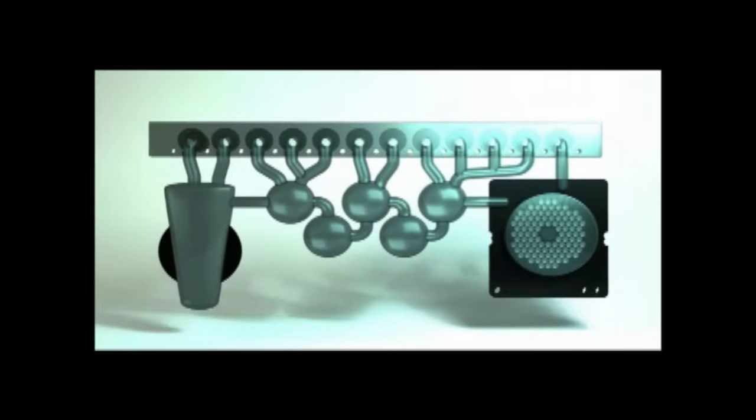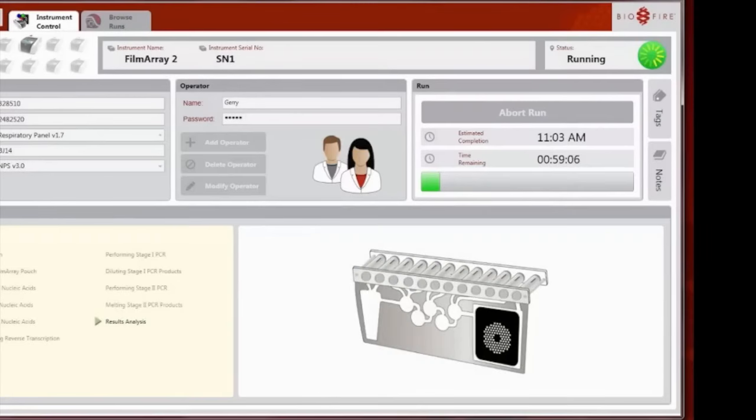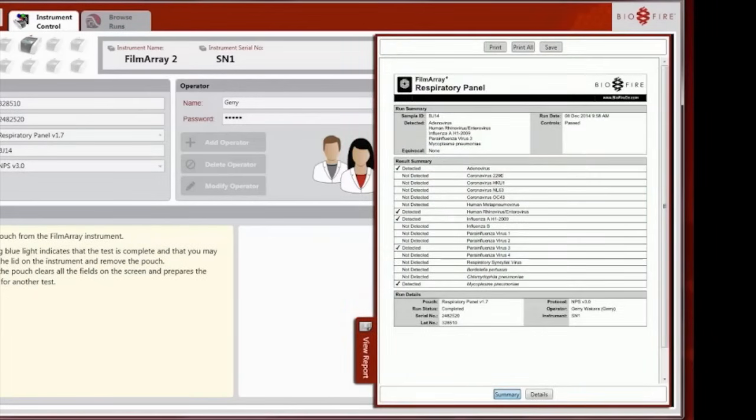The film array performs a melt to confirm the presence or absence of specific temperature signatures of the second stage PCR products. The film array software processes the data and makes a positive or negative call for each organism.